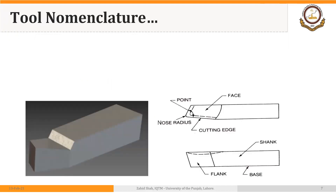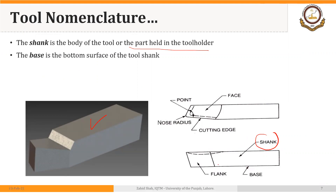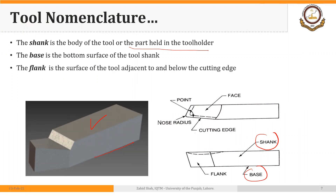These are the parts of a single point cutting tool. First, we have the shank — the body of the tool or the part held in the tool holder. The cutting tool is held through this shank in the tool holder. Then we have the base, that is the bottom surface of the tool shank. Then we have the flanks — the surface of the tool adjacent to and below the cutting edge.